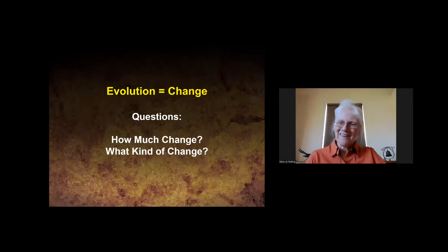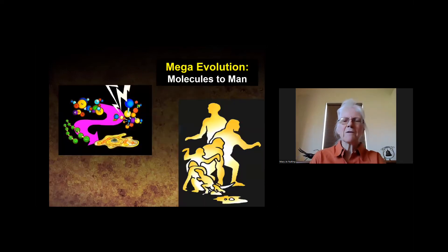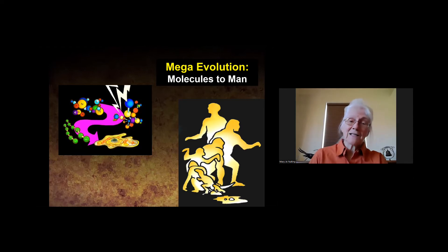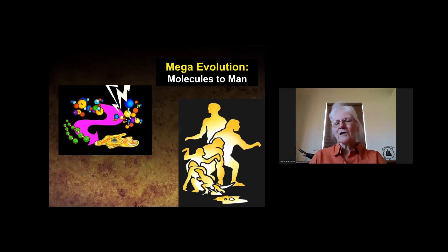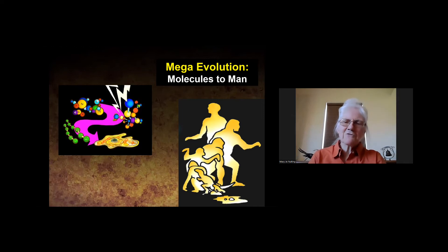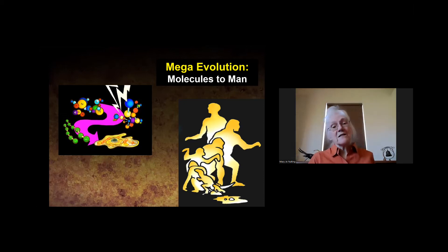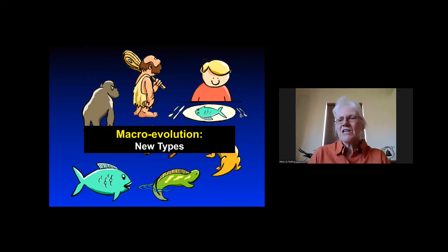The word 'evolution' simply means change, so the question is: how much change and what kind? Are we talking about molecules-to-man mega-evolution — molecules from non-living matter eventually turning into human beings? Or macro-evolution, changing from one type to another — fish to philosophers, given enough time? Or simply variation within a created kind, like varieties of frogs still being frogs, or varieties of dogs still being dogs?